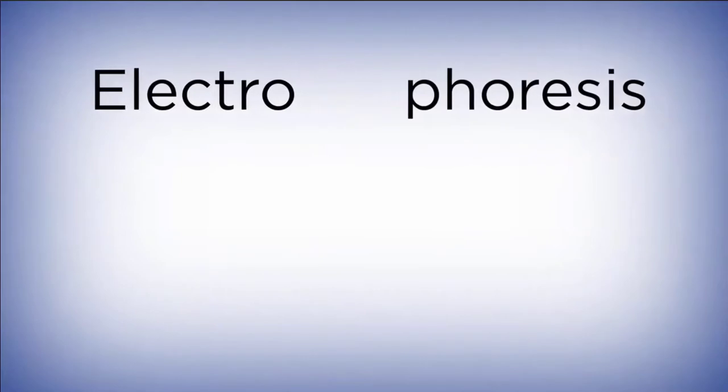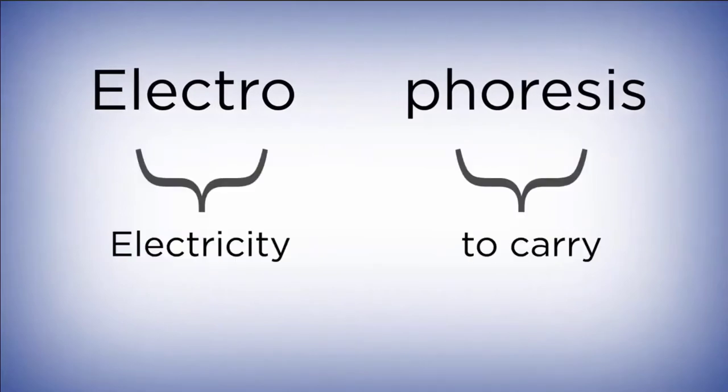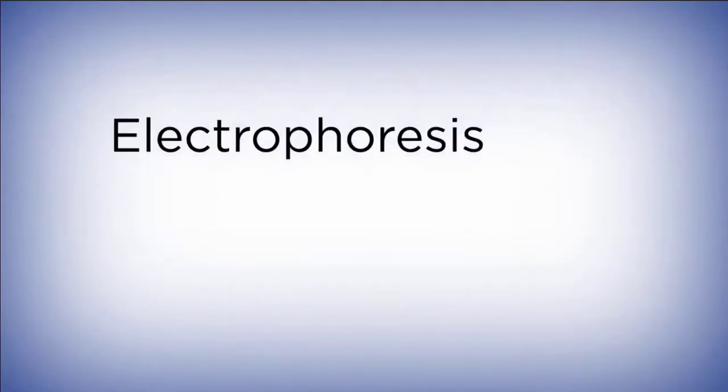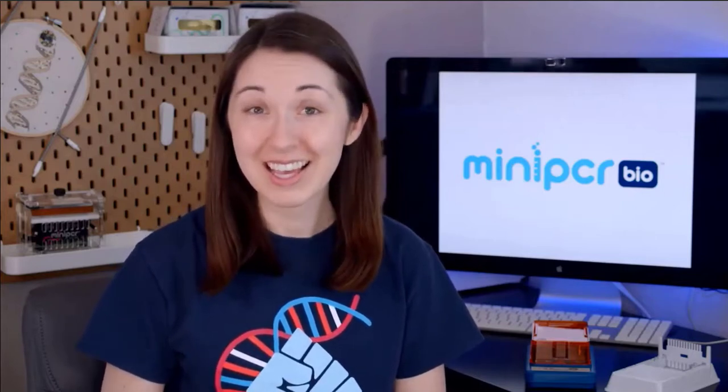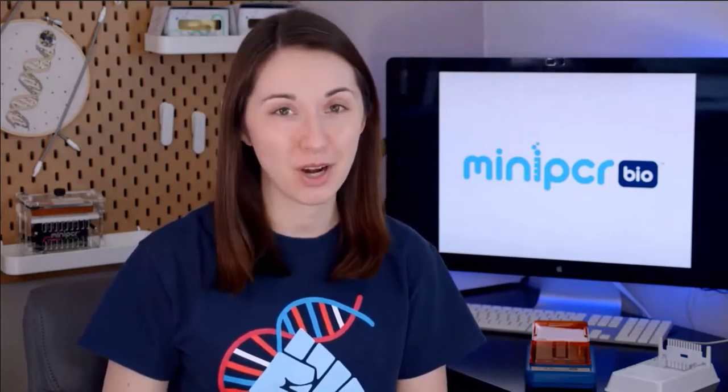Electrophoresis is a long word that means carried by electricity. In the lab, it refers to the movement of molecules like DNA, RNA, or protein, mobilized by an electric field through some kind of substance. One of the most common uses of electrophoresis is to use an agarose gel to separate pieces of DNA in order to visualize them and determine their sizes. Today, we're going to take an in-depth look at that process.